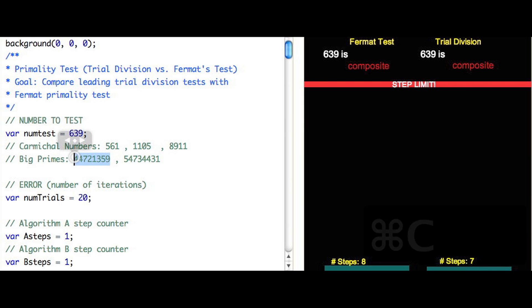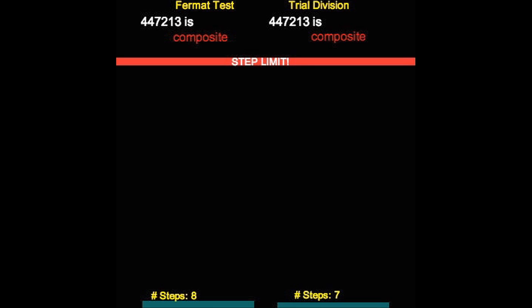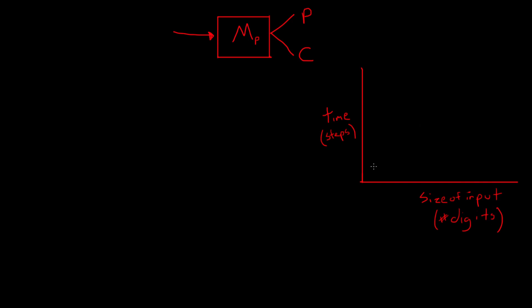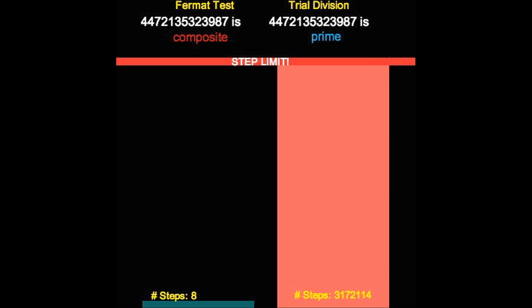And notice that in the worst case, which we know is when we provide our algorithm with a prime, it's going to do the maximum amount of work. The Fermat test is much more efficient than trial division, especially because the number of steps doesn't scale with the input. And that's a key distinction. We set the number of trials and that's it. We never have to worry about our algorithm running millions and millions of iterations as we did before.